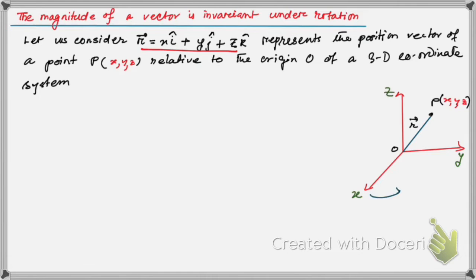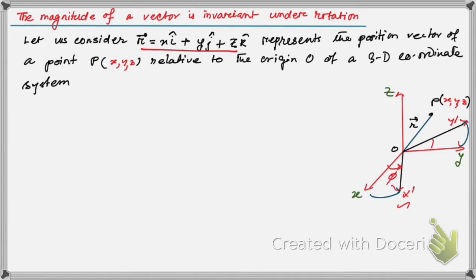Now let us rotate this system — the x-axis and y-axis — about the z-axis. This gives us a new coordinate system. The angle of rotation is phi, and this angle is also phi. So, according to the new system, the coordinates become x-dash, y-dash, z-dash — the new coordinates of point P.